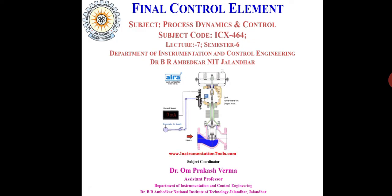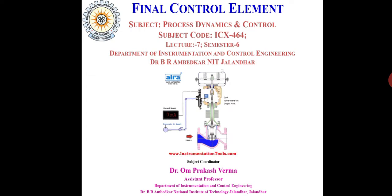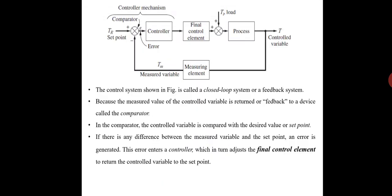We have to keep these process variables within a required operating range to ensure quality and maintain the quantity of product. Each control loop we have studied in control systems has a basic structure, and we can see this from the basic control loop diagram.